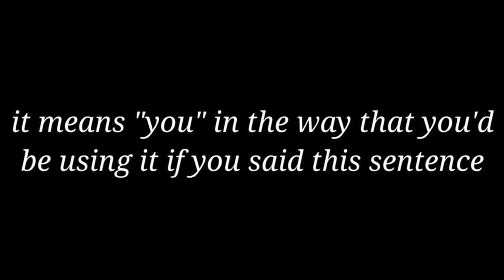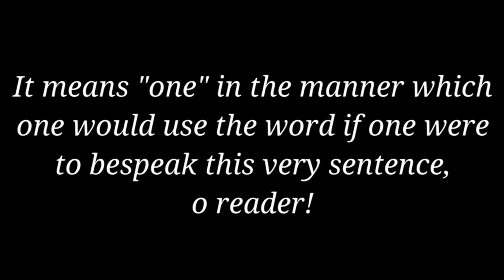Volapük has seven singular pronouns: ob, ol, of, om, os, on, and ok. Originally they roughly corresponded to I, you, she, he, it, one, and themself. It's a bit more complicated though. First of all, on, which I translated as you, isn't actually a second-person pronoun — it means you in the way that you'd use it in a generic sentence, where you isn't a specific person but just people in general. People used to say one for this in English, but nowadays that's mostly something one does if one wants to sound more sophisticated than one actually is.